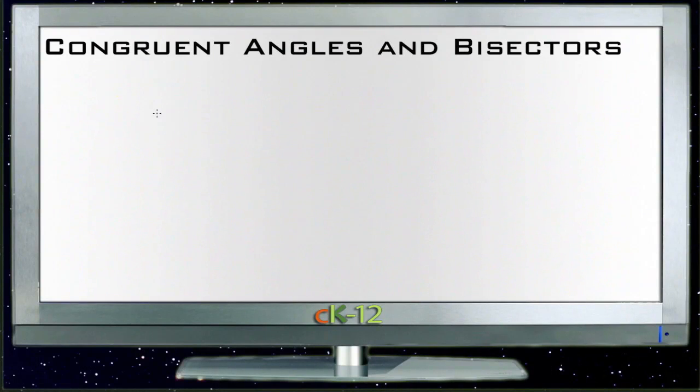This lesson is congruent angles and angle bisectors. Congruency is a geometric or math word that means exactly the same, and it's noted by a sort of funny looking equals sign that has a squiggly mark on top like this. This little mark right here means congruent.